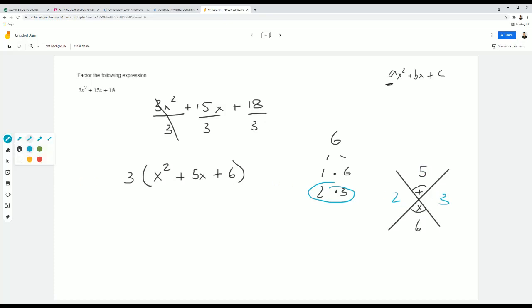So we can still factor this even more. So let's see, we have that 3 here, but now we can factor this into x plus 2 times x plus 3. This is the fully factored version.